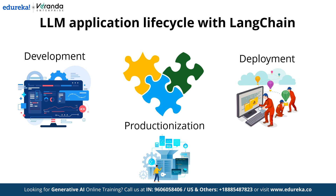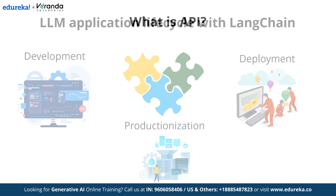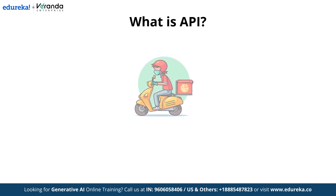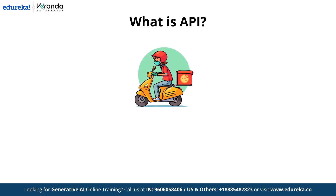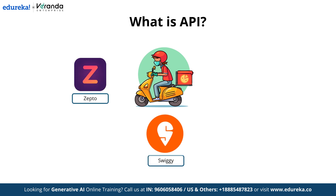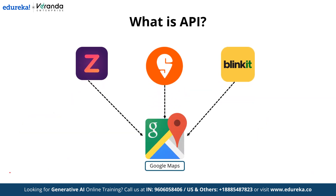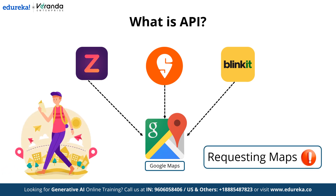Now let's take a step back and understand the role of APIs in powering these LLM applications. In all these applications and models, one thing is common — they use APIs. APIs act as intermediaries that enable different systems to communicate with each other. For example, they allow apps like Swiggy or Blinkit to display your delivery driver's location in real-time. Apps like Swiggy and Blinkit use APIs to show the location of your delivery driver, following a layered process involving servers and security mechanisms. First, the app sends a request to Google Maps API, then the API forwards the request to Google servers.